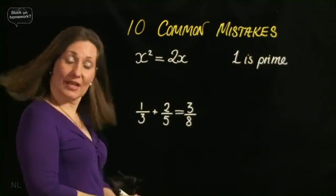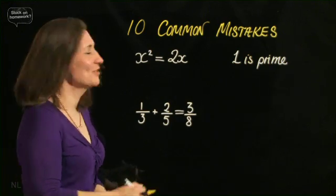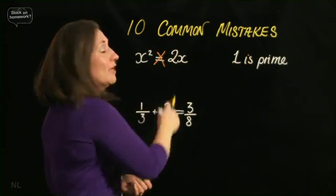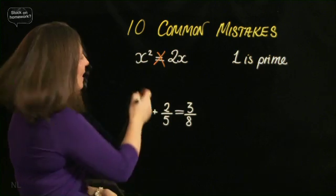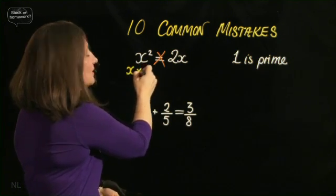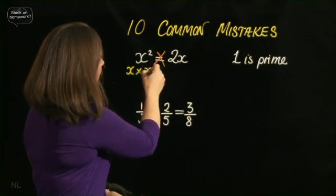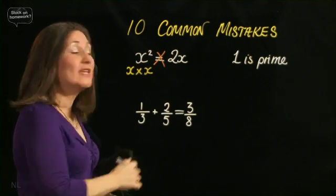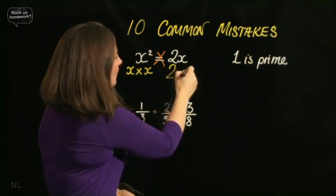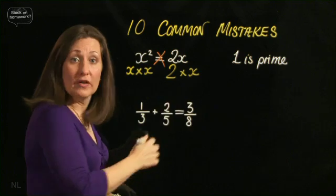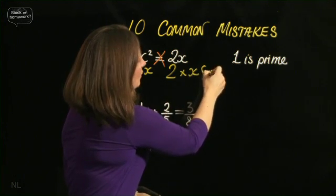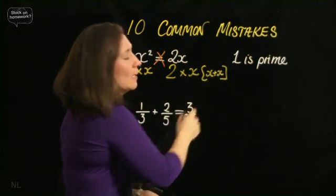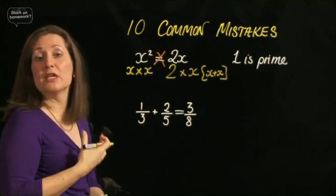So what have I got here? x squared equals 2x. Absolutely not. Why? Because I know x squared is x times itself, x. Whereas 2x is 2 times x. Or, if you want, x plus x. You've got 2 of them.